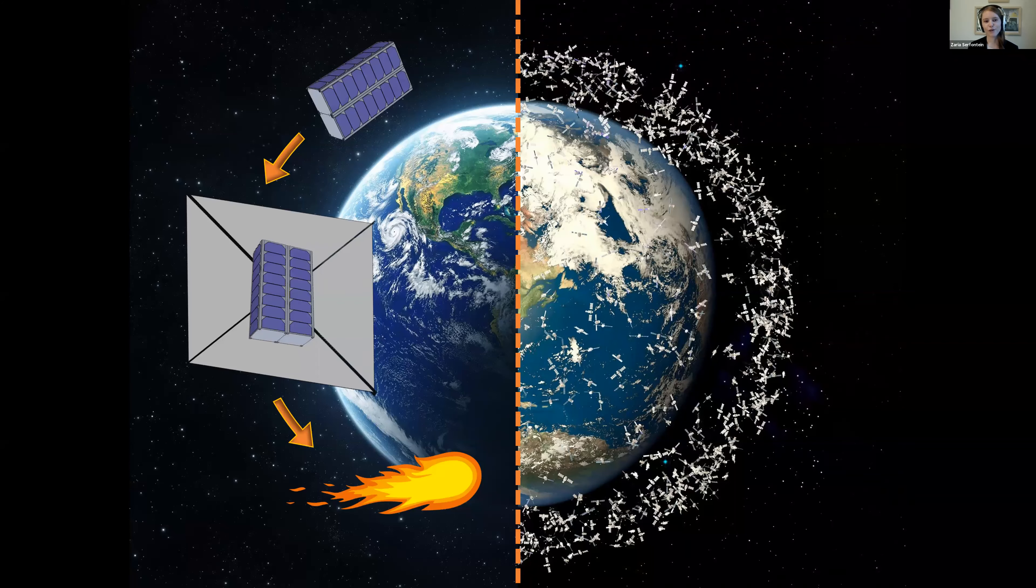Satellites orbiting the Earth travel at about eight kilometers per second—that's 10 times the speed of a bullet. With that much energy, even small collisions in space can have massive consequences. Debris from satellite collisions doesn't just fall back to Earth or burn up in the atmosphere but continues orbiting, posing a serious threat to operating satellites.